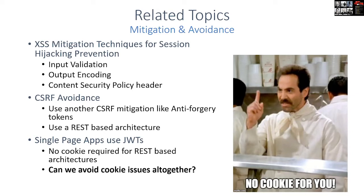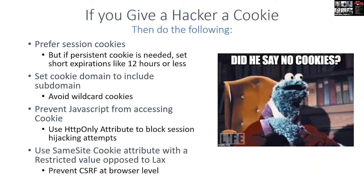If you're using REST APIs, you're likely using JWTs instead of cookies, which brings us to the next section. Maybe we just don't need cookies — maybe we can do without them. Let's think through that and examine it by looking at different application architectures. As a quick review: if you are going to give a hacker a cookie, prefer session cookies that are deleted when the browser tab closes, avoid wildcard cookies, use the HttpOnly attribute so JavaScript can't access the cookie, and use the SameSite cookie attribute as part of a mitigation against CSRF.